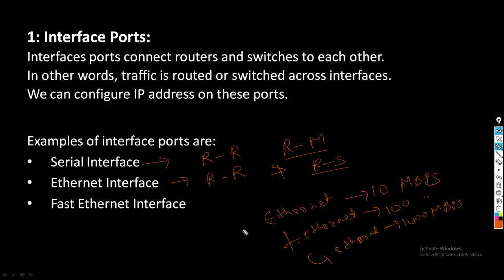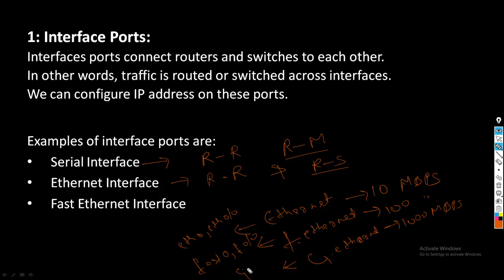We can write Ethernet interface as Ethernet 0 or Ethernet 0/0. Fast Ethernet interface as Fast Ethernet 0 or Fast Ethernet 0/0. Gigabit Ethernet as Gig 0 or Gig 0/0.